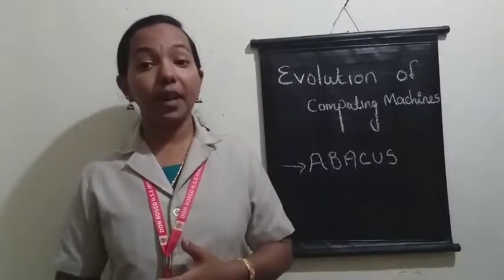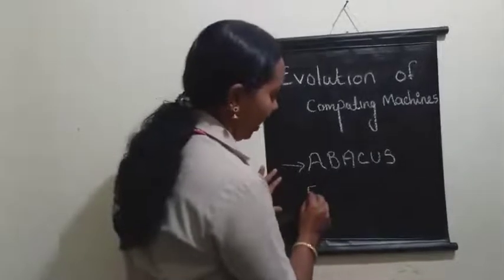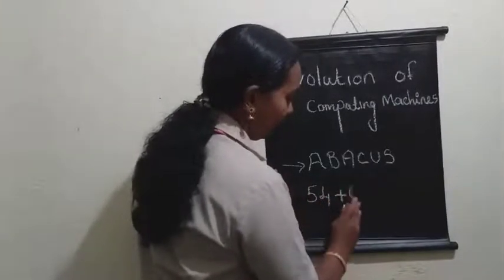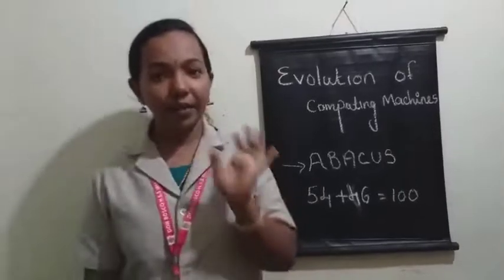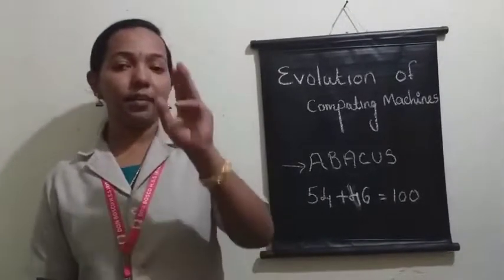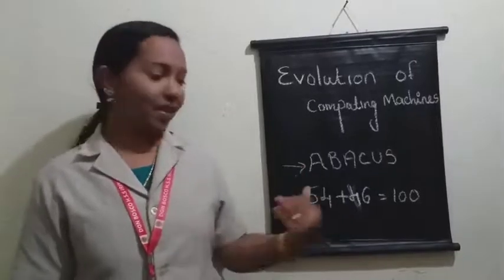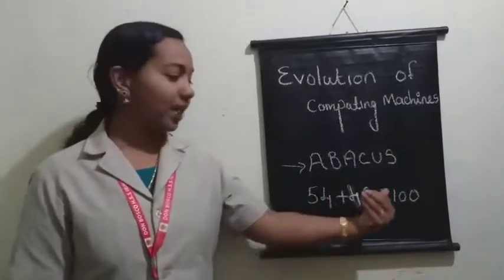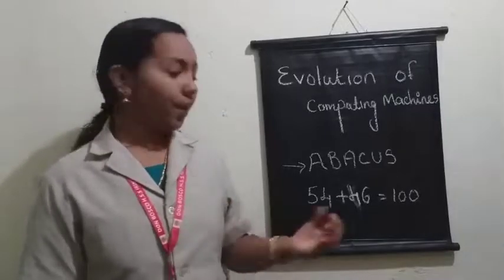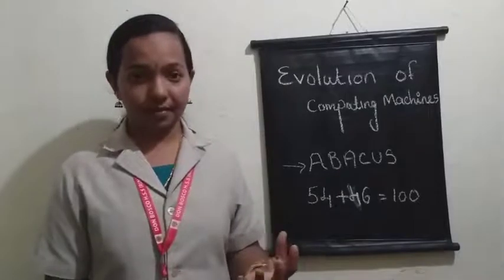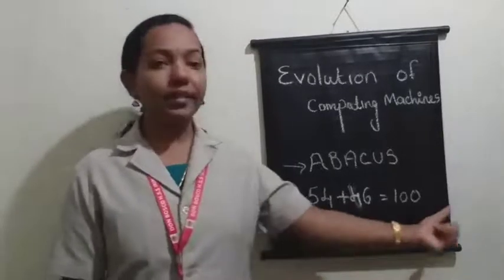We are going to discuss how we represent numbers using Abacus. For example, suppose we are going to represent the addition 54 plus 46. What will be the value of 54 plus 46? Definitely 100. In your textbook, there is one picture showing Abacus operation — how we perform addition using Abacus. The first number is 54 and the second number is 46, and the result will be 100. First, we want to represent 54 using Abacus, and then 4 plus 6 and 5 plus 4 will give us 100.